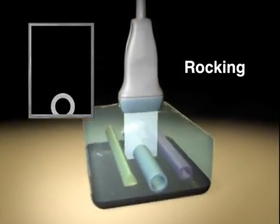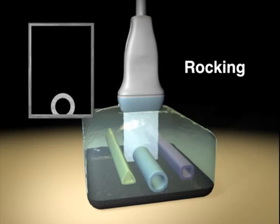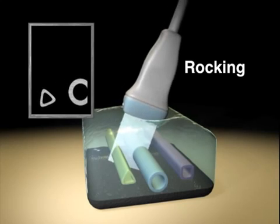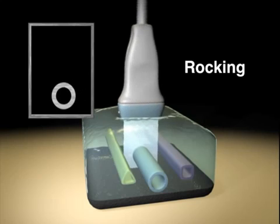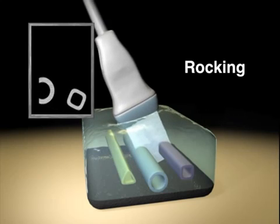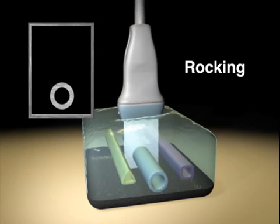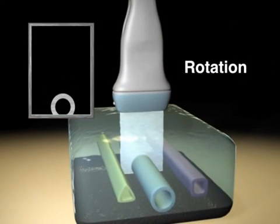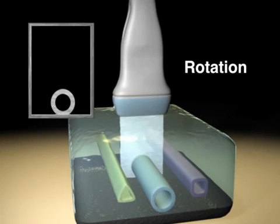Rocking allows us to extend the plane of imaging when we are working in a narrow acoustic window. Rotation is used to switch between short axis and long axis images.